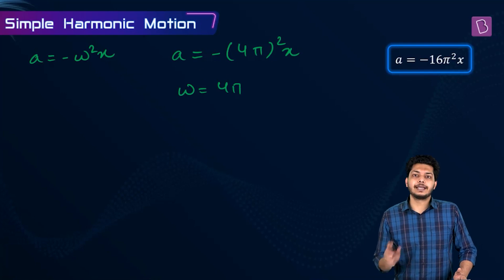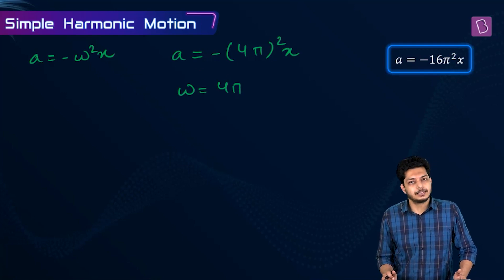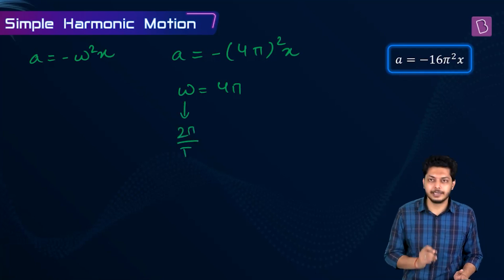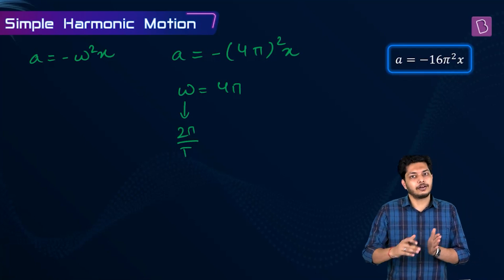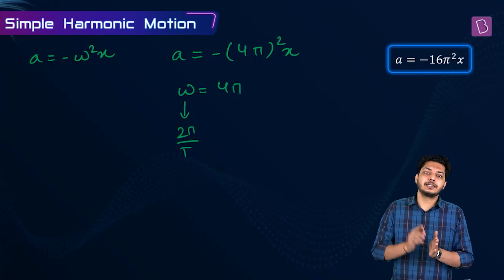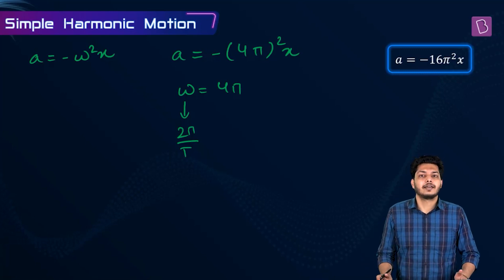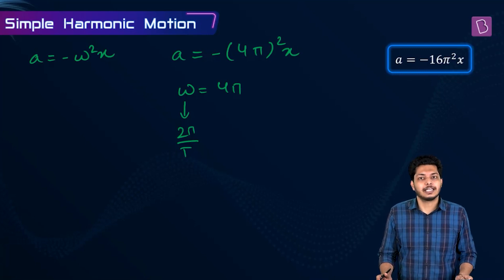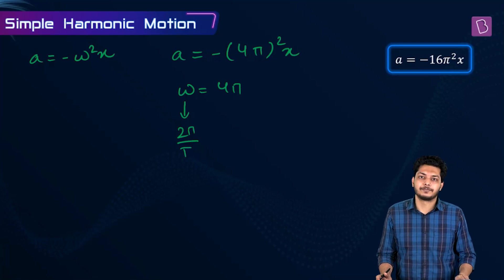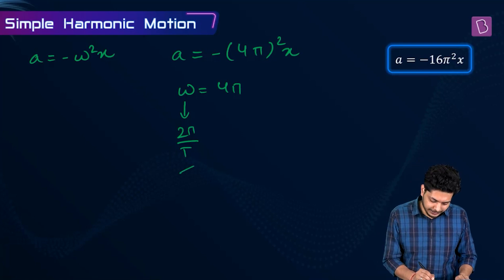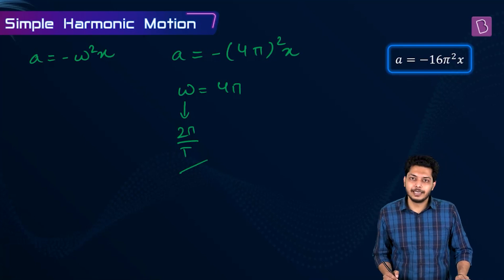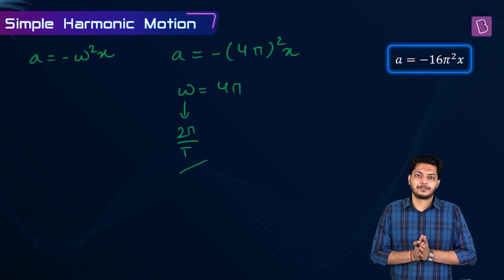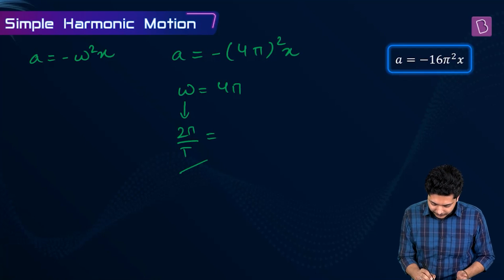We need to find ω because we have to find the time period. We know that ω equals 2π divided by the time period T. Angular velocity is angular displacement per unit time; a full cycle of 2π radians occurs in time period T. So 2π by T equals 4π.